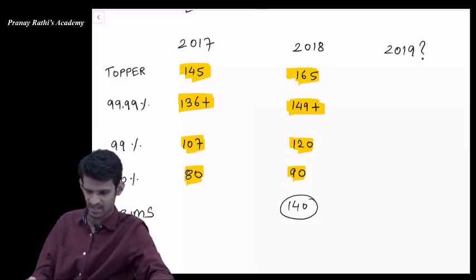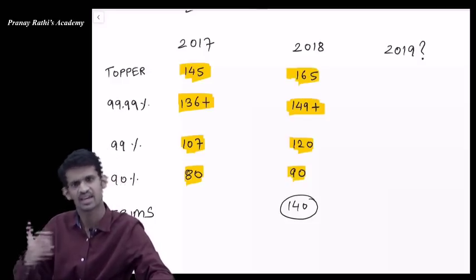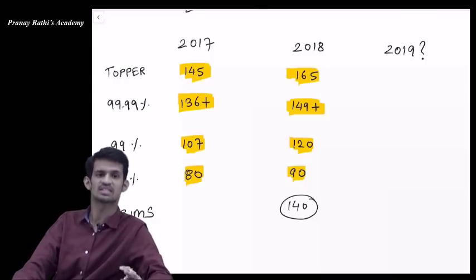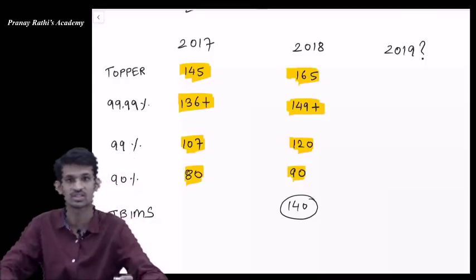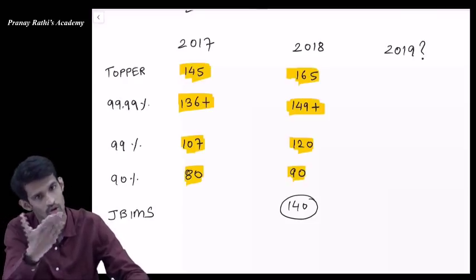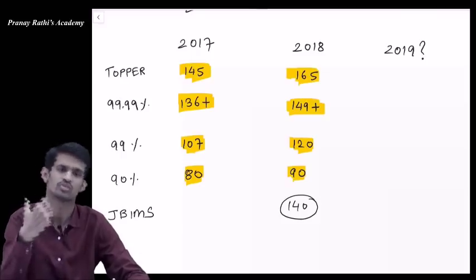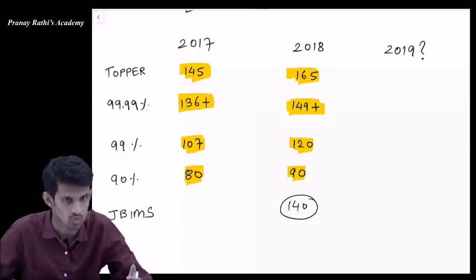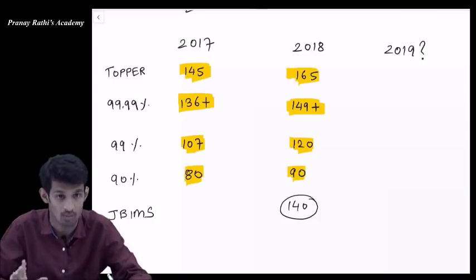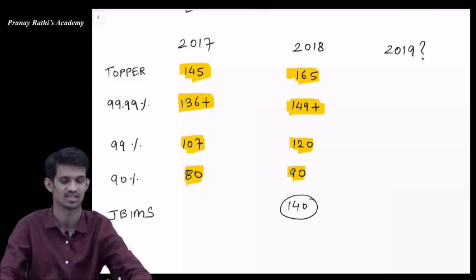In the year 2018, the cutoff for JBIMS open category was 140. Obviously you cannot predict whether the 2019 paper will be easy or tough, but to be in the safe zone, since everything rises every year, there are chances 2019 will rise. So we have to be ready for the toughest things.